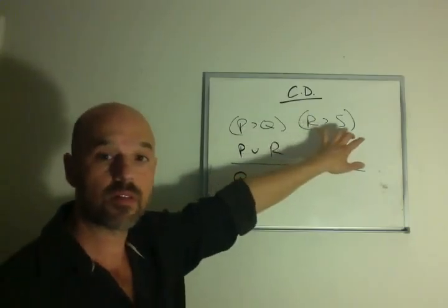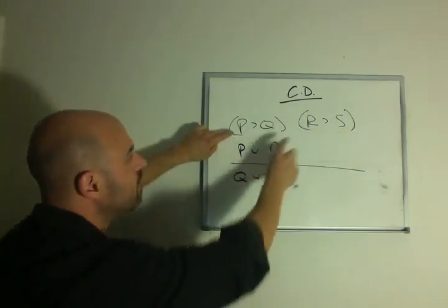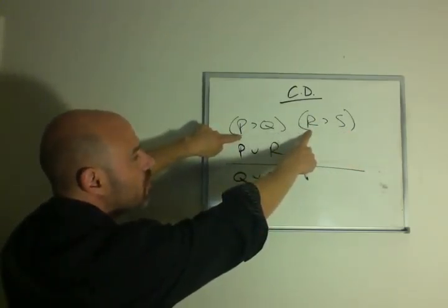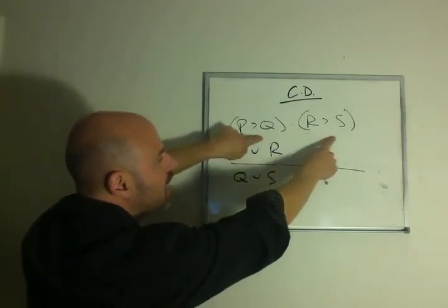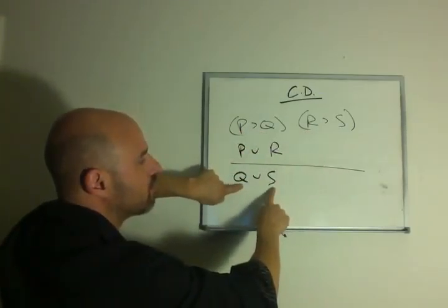You're given two if-then statements. You're then told that at least one of these two things is true. What does that mean? At least one of these two things must be true.